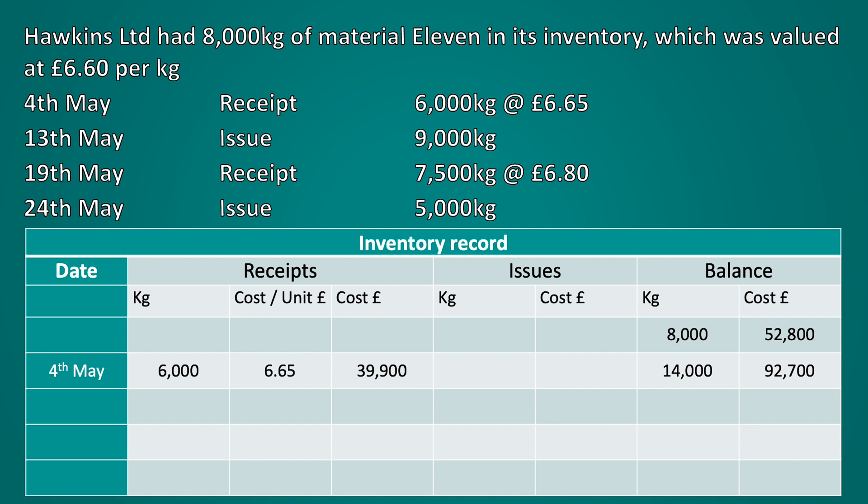At this stage leave this figure in your calculator and use it to calculate the issue. As the issue is for 9,000 kilograms, we multiply this by the average cost per kilogram, giving us an issue value of £59,593.